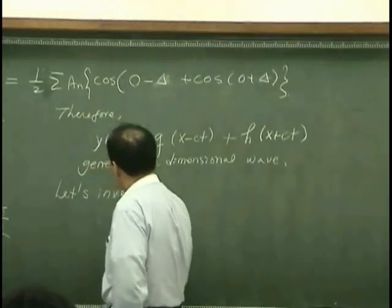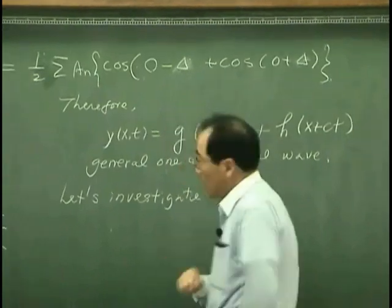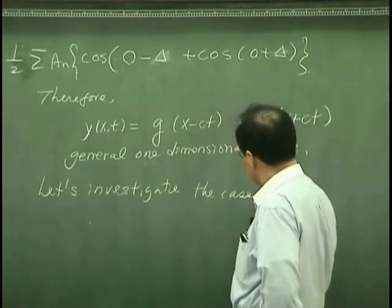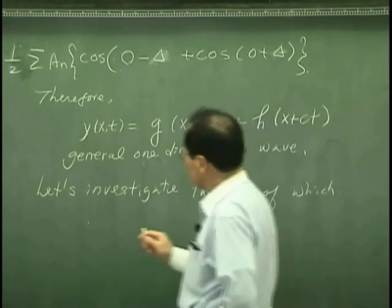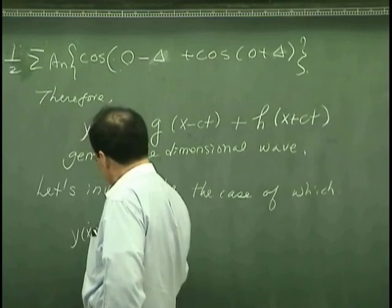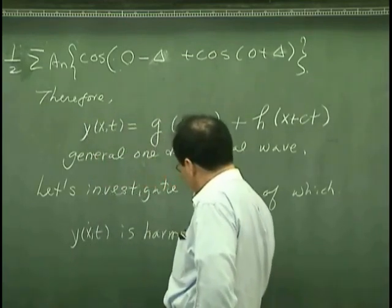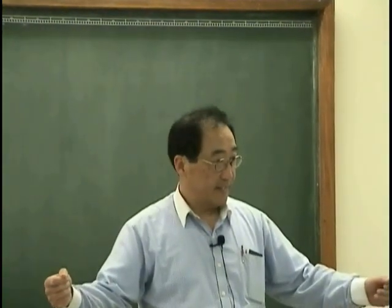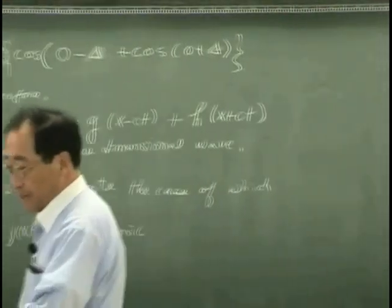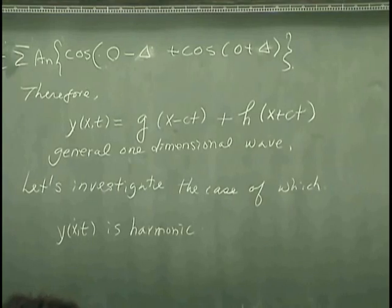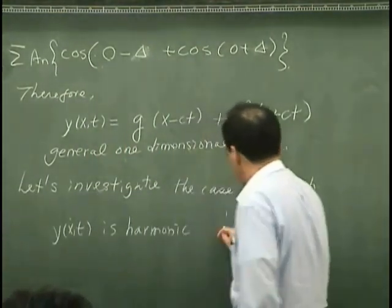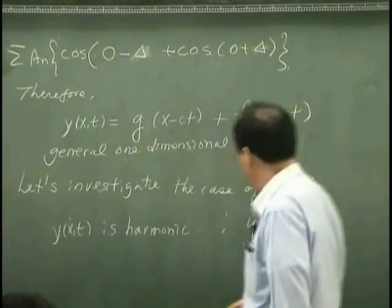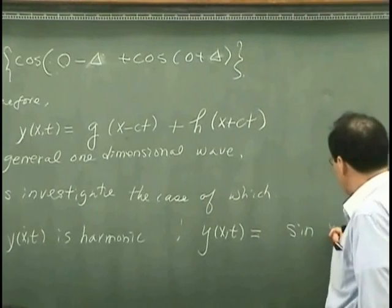Let's investigate some of the special cases. In other words, what if y(x,t) is harmonic? As I demonstrate, sine and cosine. For example, if y(x,t) is sine(x - ct).